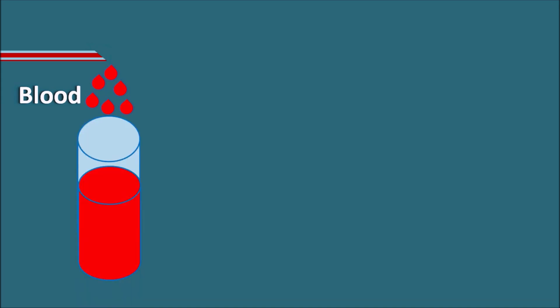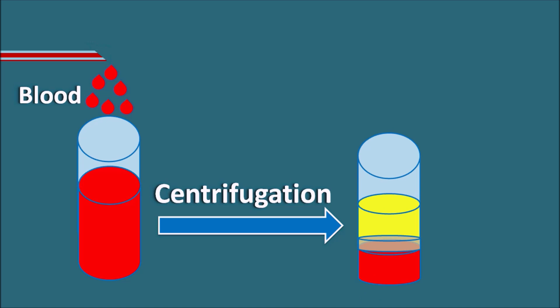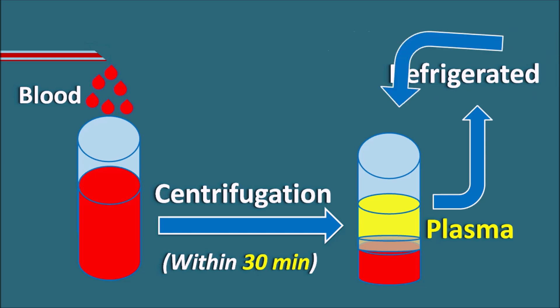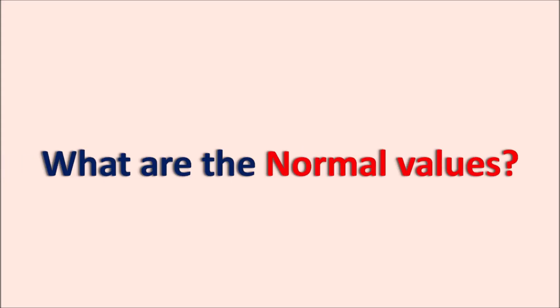The IL-6 test is done by collecting blood from a vein into a test tube coated with EDTA to inhibit coagulation and separate the plasma. After collection, the blood sample should be immediately centrifuged so that the plasma can be separated — the supernatant liquid is the plasma, which is stored for analysis of IL-6. Importantly, centrifugation should be done within 30 minutes of blood collection; if the plasma is separated after 30 minutes, it may result in analytical errors. Once separated, the plasma should be immediately refrigerated or frozen, and freezing should be done within 24 hours to eliminate pre-analytical errors.